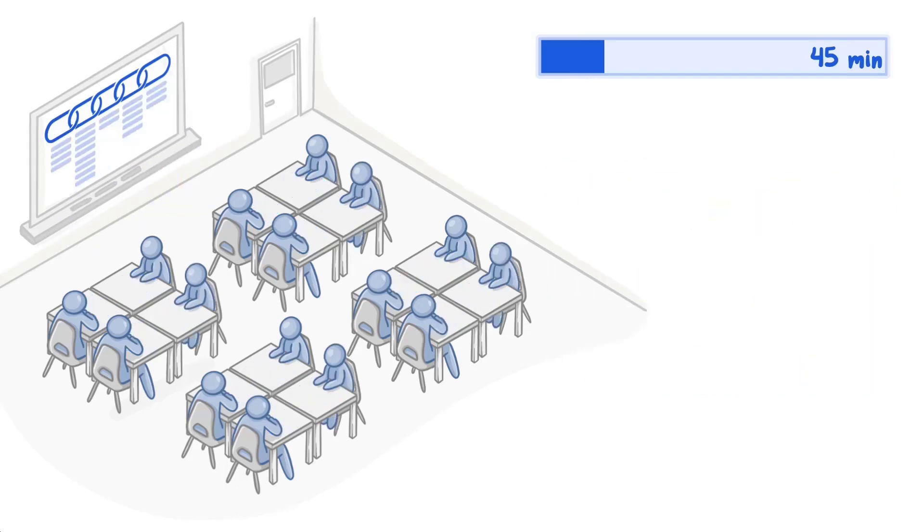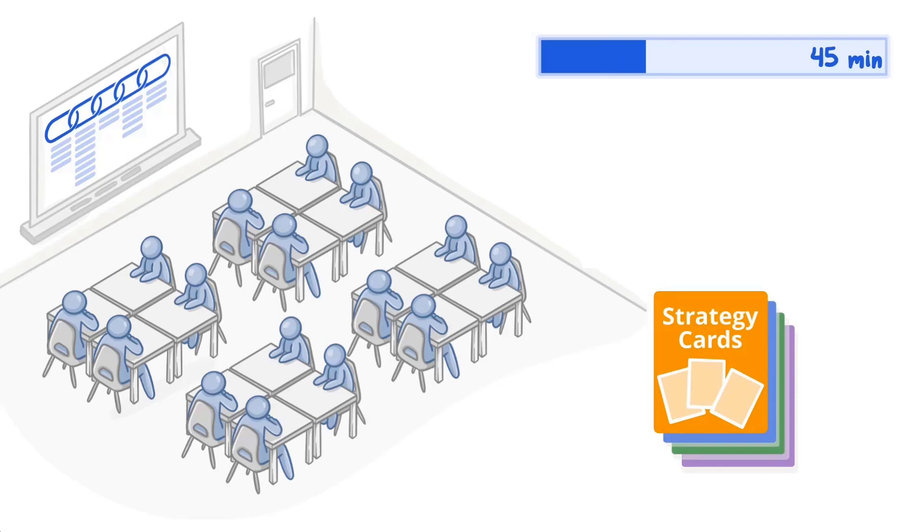The next step is to arrange students into groups of three to five and provide a strategy cards sheet to each group. The students will start by brainstorming how people interact in the school environment and identify corresponding prevention strategies to break a link in the chain of infection to reduce the spread of NERD.